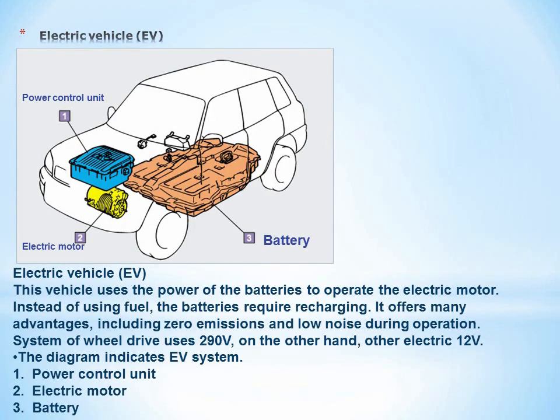Electric vehicle (EV): This vehicle uses the power of batteries to operate the electric motor. Instead of using fuel, the batteries require recharging. It offers many advantages, including zero emissions and low noise during operation. The system of wheel drive uses 290 volts, while other electrical systems use 12 volts. The diagram indicates the EV system.